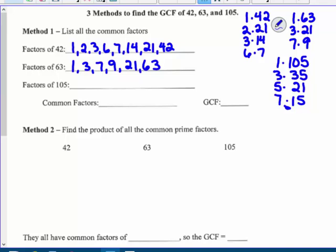So I'm just trying the numbers in between 7 and 15 here to see if there are any more factors that would work, but that's it. So it's 1, 3, 5, 7, 15, 21, 35, and 105. So what's common to all of them? 1, 3, 7, and 21. So the greatest of those is 21.